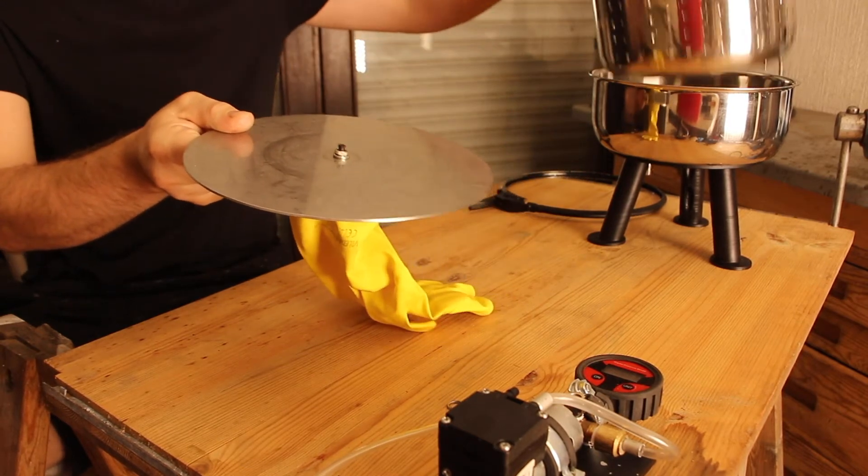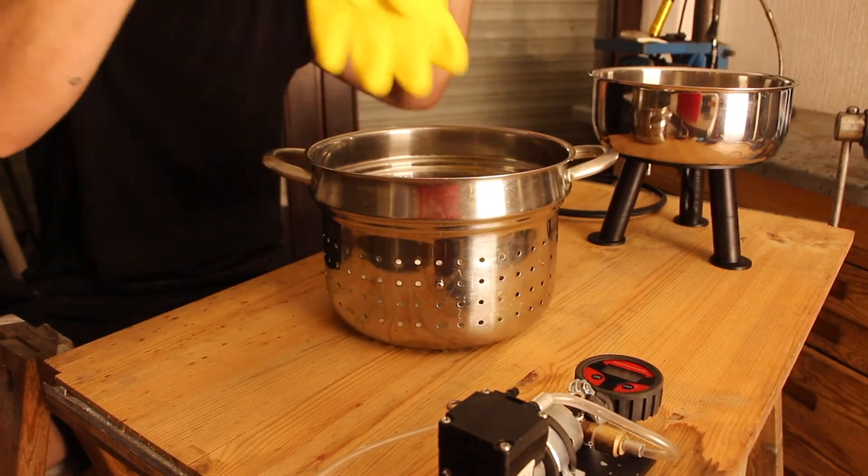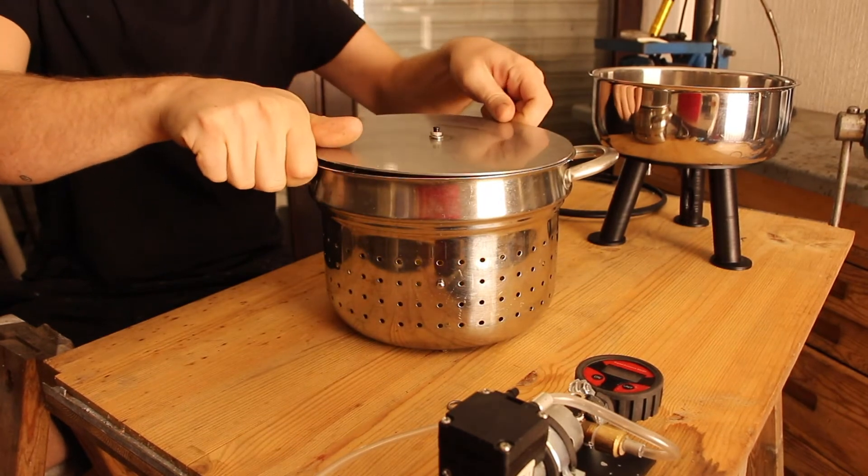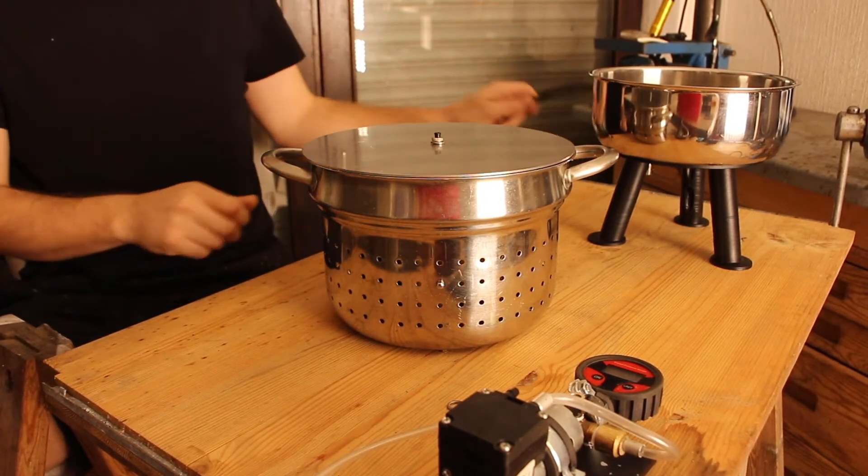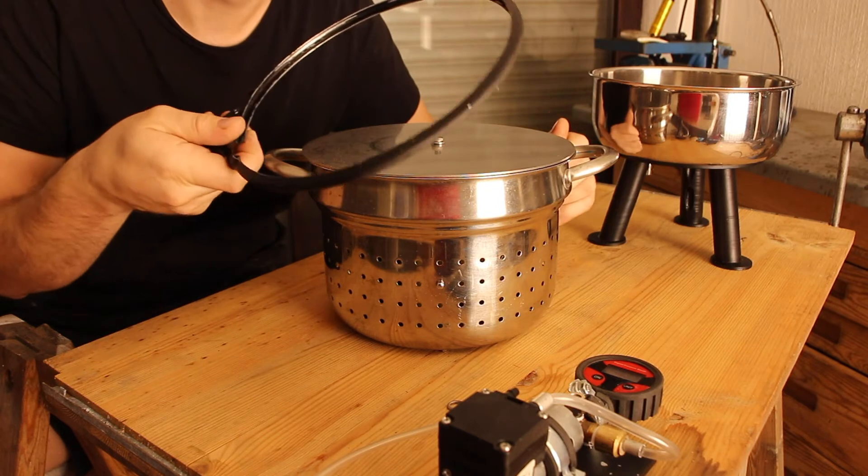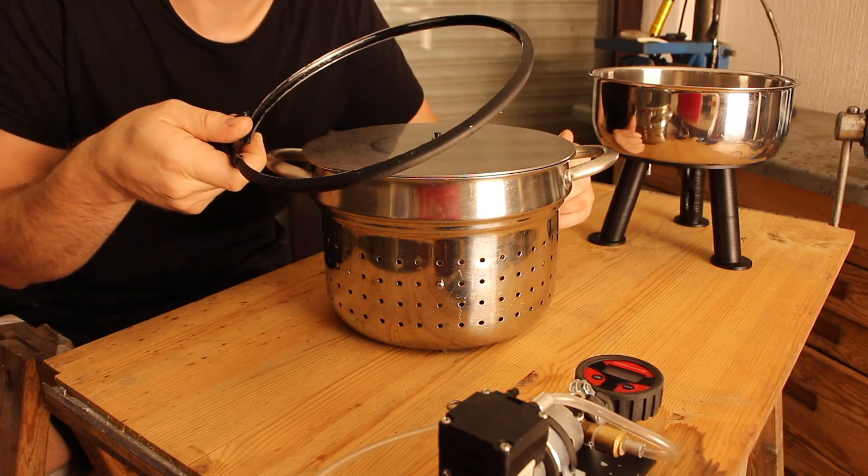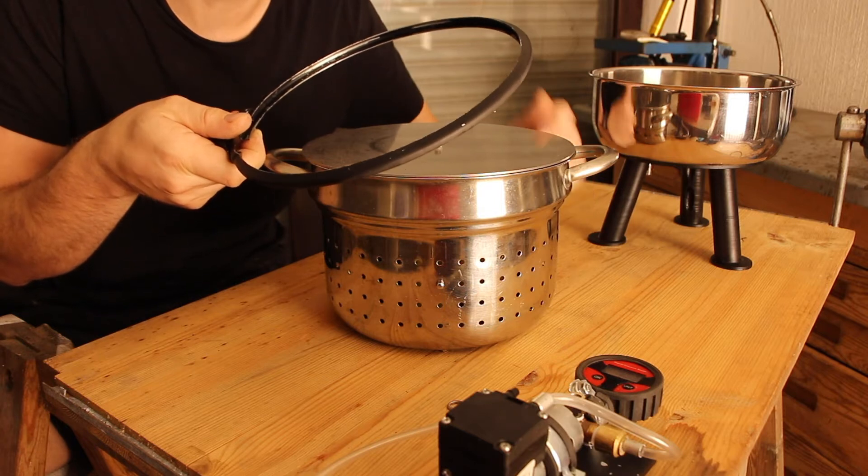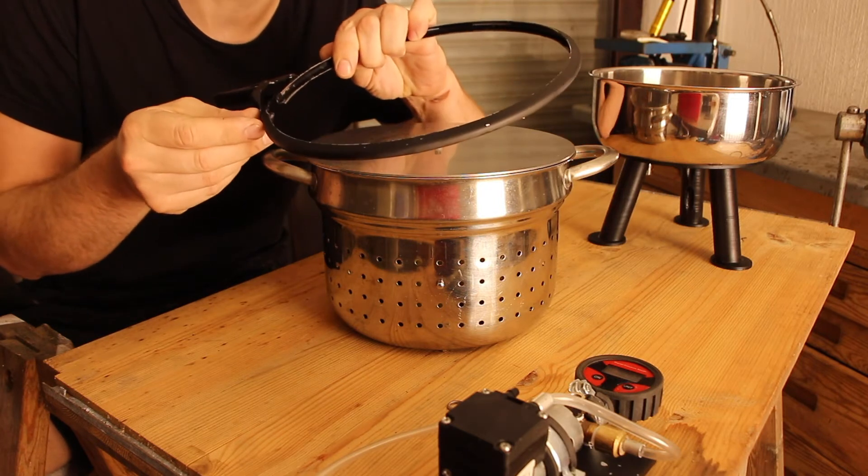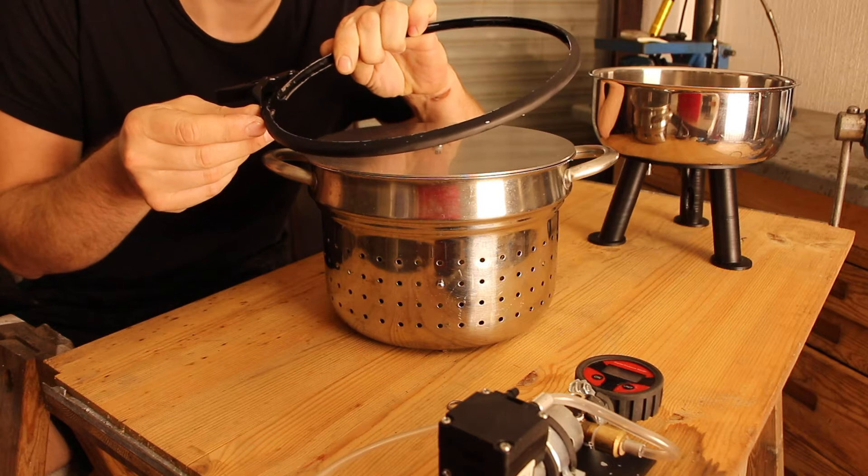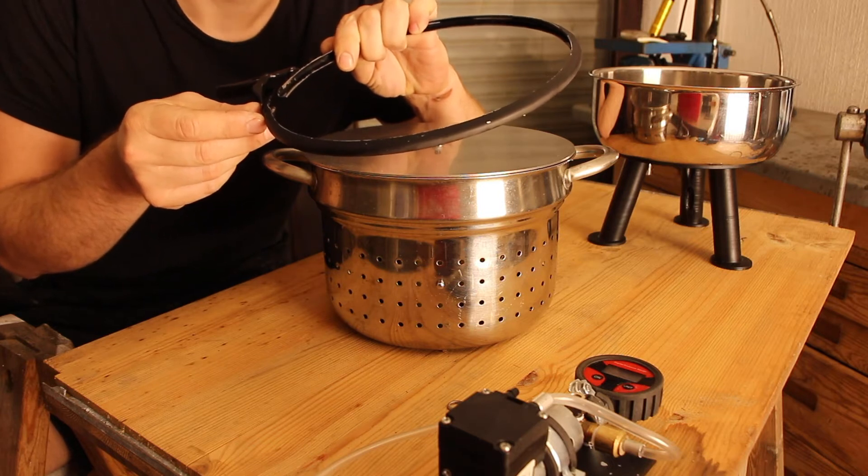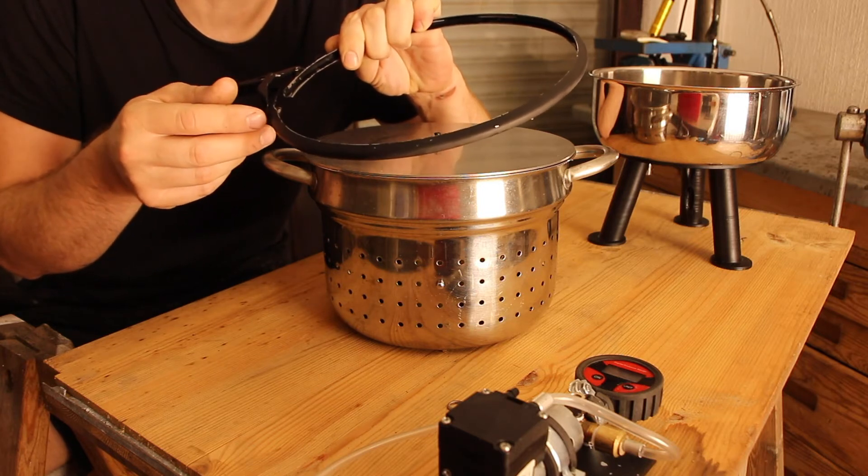So, then you take your spaghetti pot, put it in, and what you now need is a clamping ring from a barrel. They come in different sizes with little adjusting screws, that's what I would recommend.